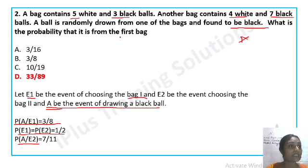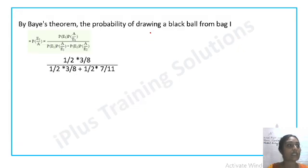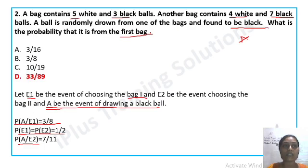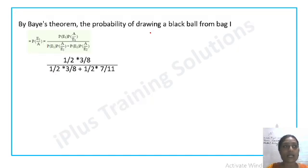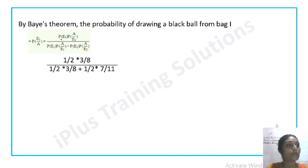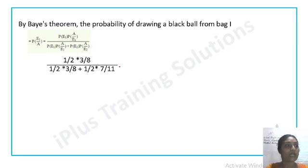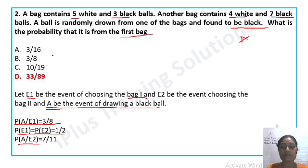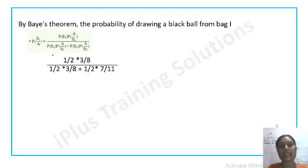We want P(e1|A): given a black ball is drawn, the probability it came from the first bag. Using Bayes' theorem: P(e1|A) = P(e1)·P(A|e1) / [P(e1)·P(A|e1) + P(e2)·P(A|e2)]. Substituting: (1/2 × 3/8) / [(1/2 × 3/8) + (1/2 × 7/11)], which gives 33/89.